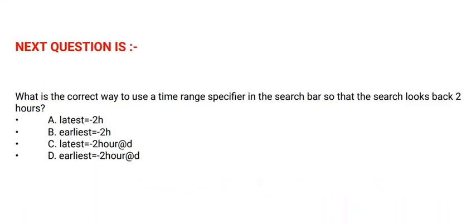Next question: what is the correct way to use a time range specifier in the search bar so that the search looks back 2 hours? Option A: latest=-2H. Option B: earliest=-2H. Option C: latest=-2H@d. The correct option is option B.